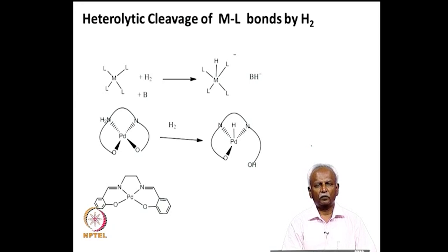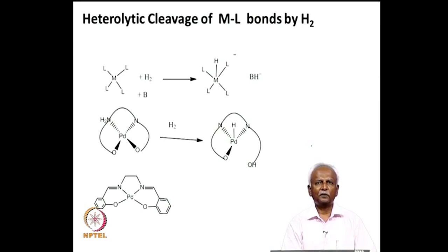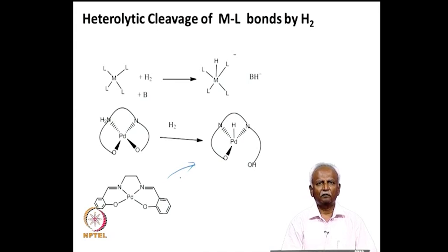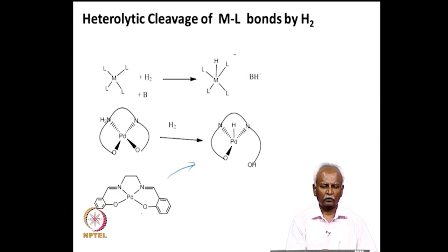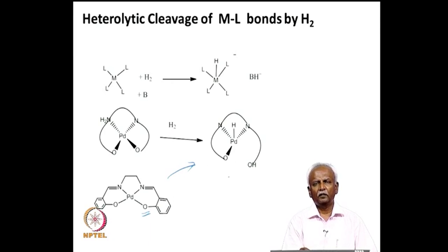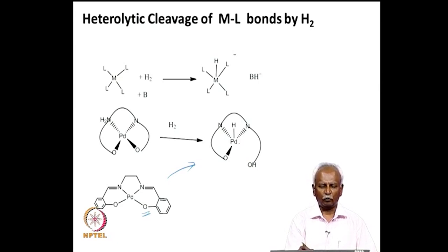The third class of activation is heterolytic cleavage of the M-L bond, carried out with the help of a ligand or base present in the medium. An example is a palladium Schiff base derivative that readily adds hydrogen — one hydrogen attaches to the metal and the other, as a proton, attaches to the phenolate of the system. You end up with a four-coordinate molecule in which the original metal-oxygen bond has been broken and an O-H bond is formed instead, with only a weak interaction remaining between palladium and oxygen.